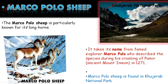The Marco Polo sheep has a very different name — it is named after the famous explorer Marco Polo, who was Italian and explored Asia, coming through in around 1271. He described this species during his crossing of the Pamirs, also called the Ancient Mountain, in 1271. The species is present in Khunjerab National Park, which is a protected area. No one can enter without a hunting license.